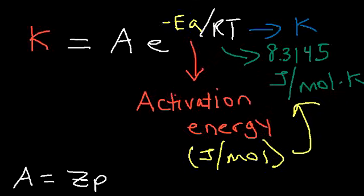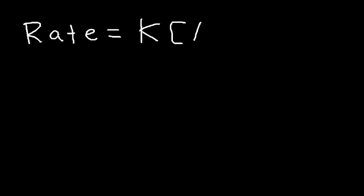We need to understand the relationship between temperature, k, and activation energy. But before we do that, you need to know how k plays a role in the rate law expression. Let's say we have this rate law expression: rate is equal to k times A. Is this a first order, second order, or zero order reaction? The exponent of A is 1, so it's a first order reaction, which means if you double the concentration of reactant A, the rate of the reaction will double.